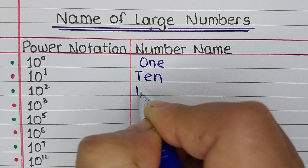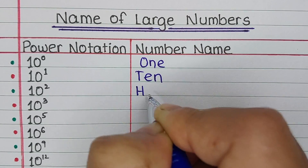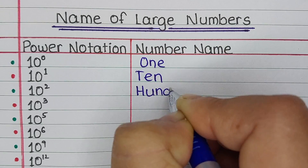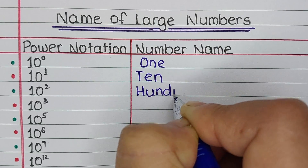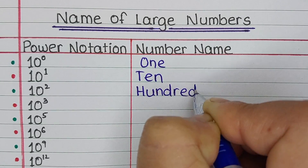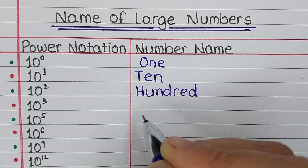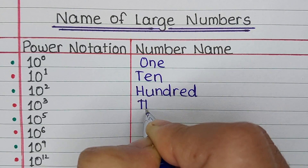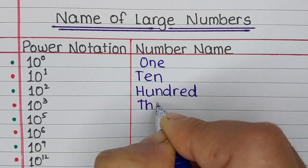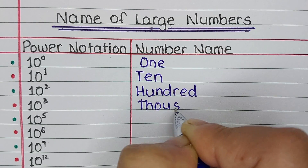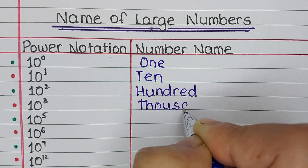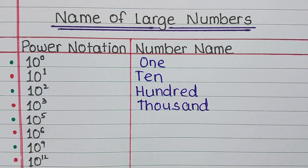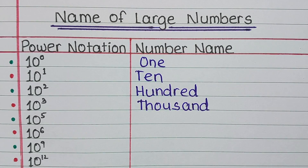The name for the power notation 10 to the power 0 is 1. 10 to the power 1 is 10. 10 to the power 2 is 100. 10 to the power 3 is 1,000.